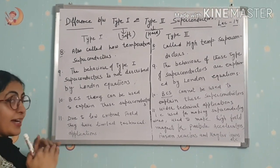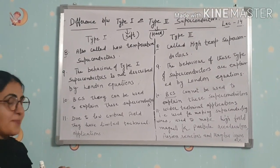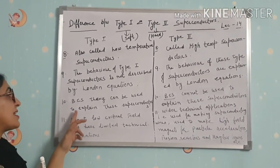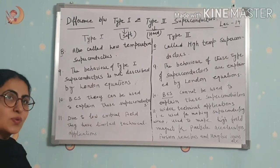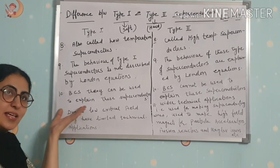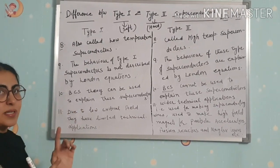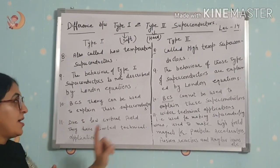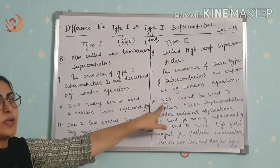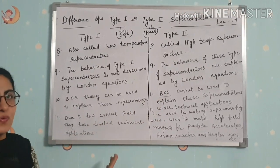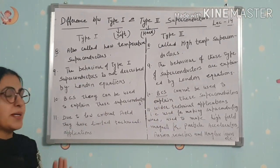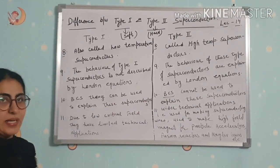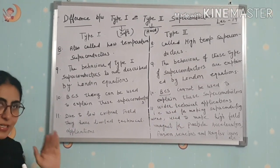Tenth difference: BCS theory can be used to explain Type 1 superconductors, but BCS theory cannot be used to explain Type 2 superconductors.